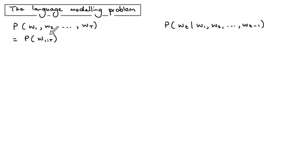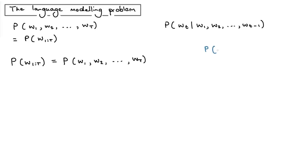How do we calculate this? We're going to repeatedly apply the chain rule of probability theory. The chain rule basically says that the joint probability of A and B is equal to the conditional probability of A given B, times the probability of B.